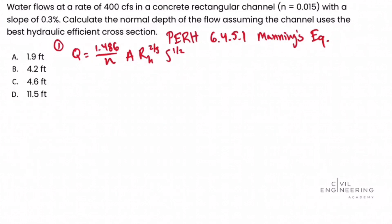Q is the flow rate, given in the problem as 400 cubic feet per second. So we'll write that in. And then 1.486, that is a constant. Manning's n value, well that's given in the problem as well. It's a rectangular channel concrete with the n value of 0.015.